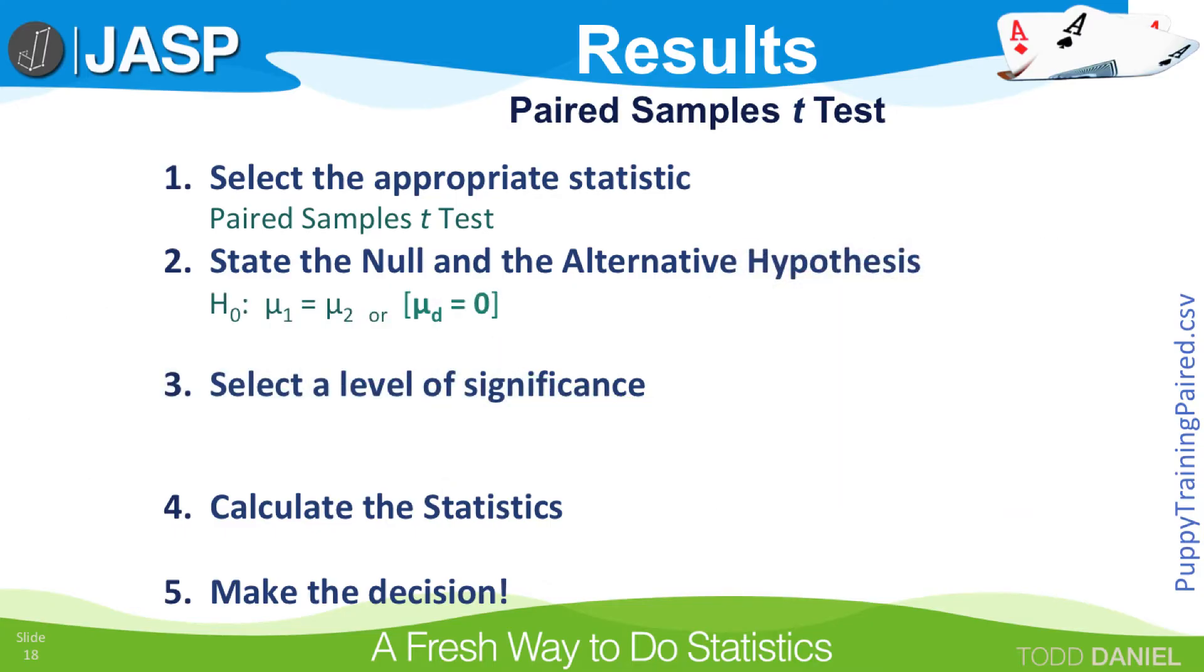Because this is a two-tailed test, our null hypothesis will be either H₀: μ₁ = μ₂, or μ_d = 0. The mean difference equals 0. That means that our alternative hypothesis will be H₁: μ₁ ≠ μ₂, or μ_d ≠ 0.